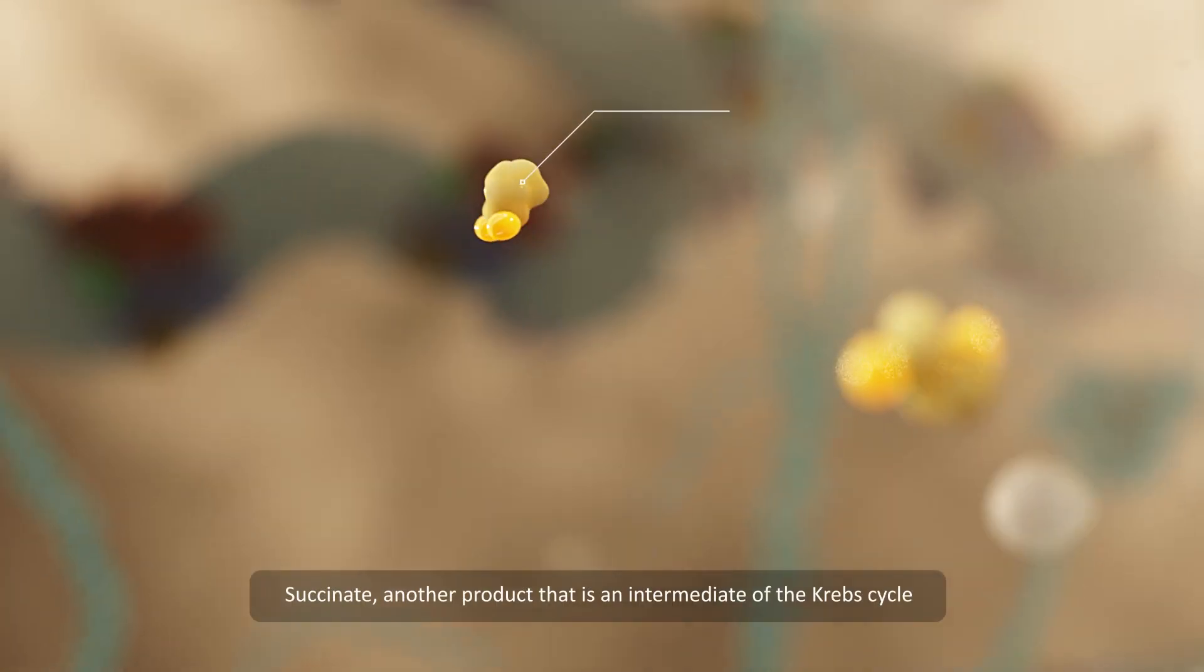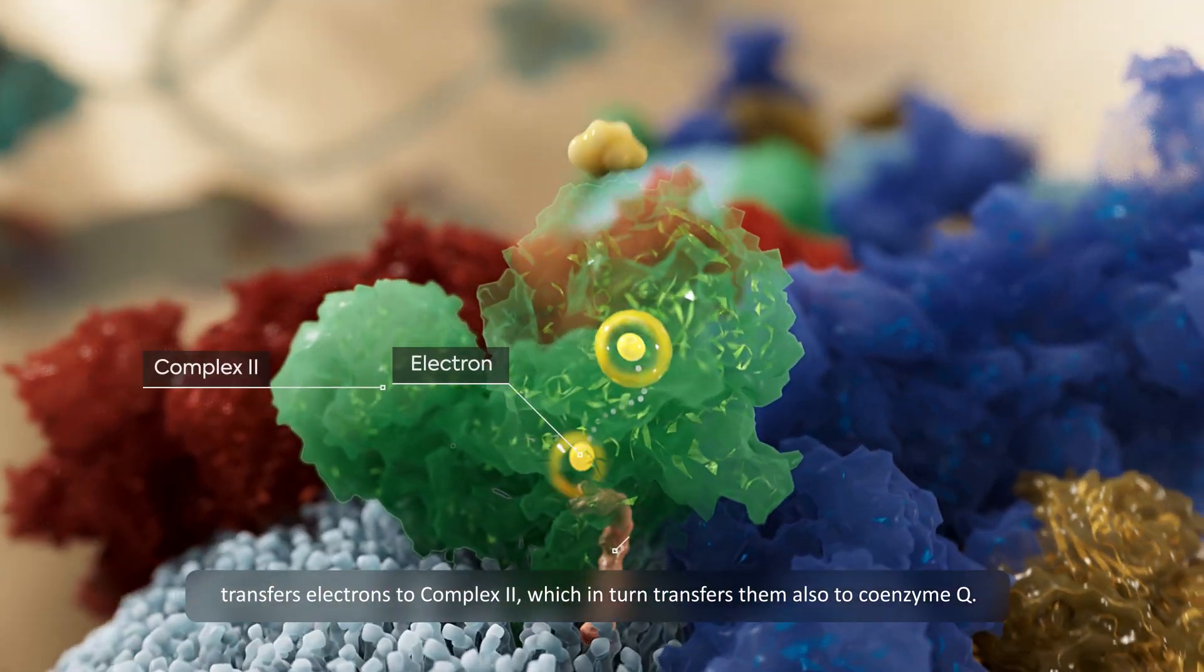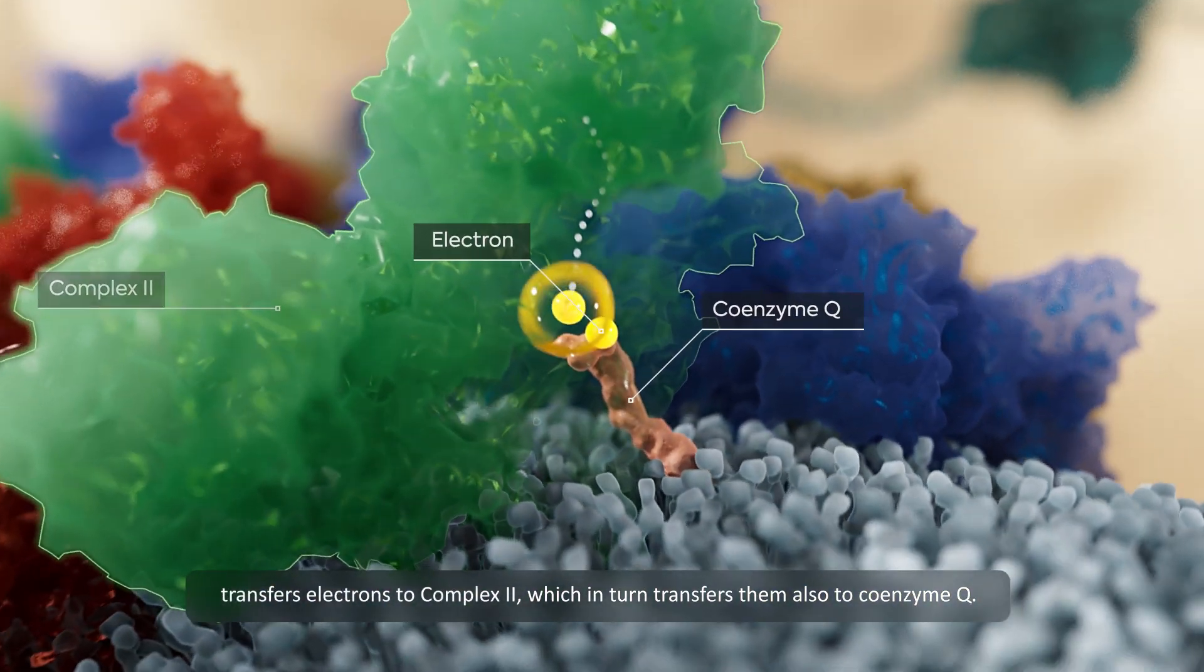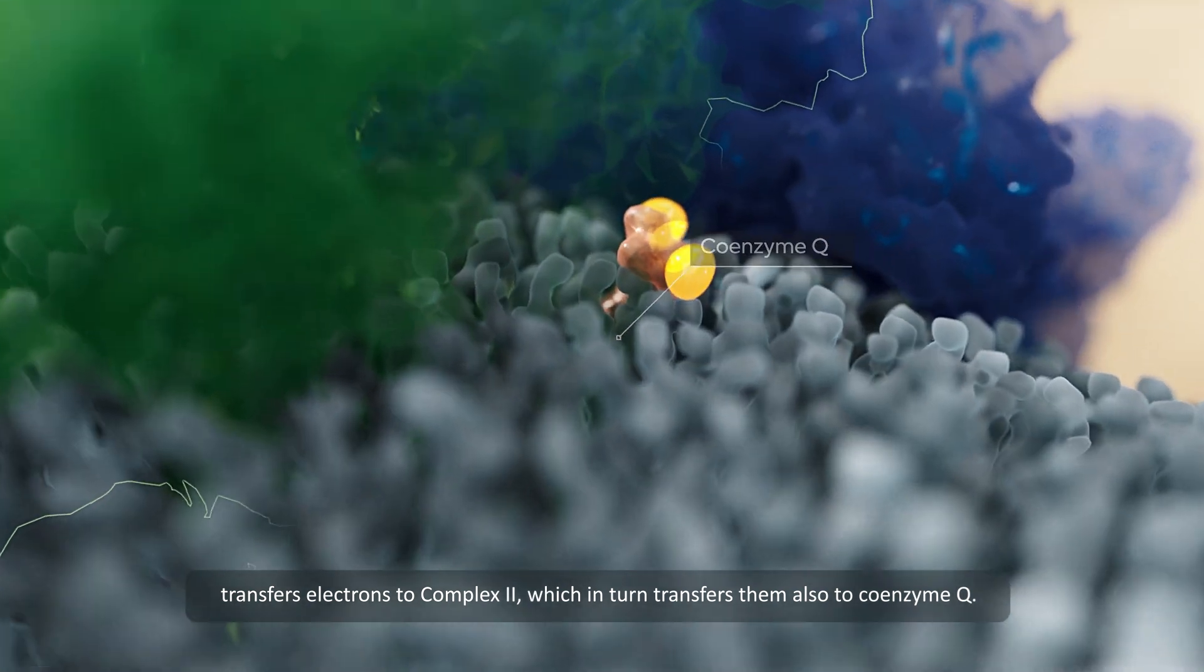Succinate, another product that is an intermediate of the Krebs cycle, transfers electrons to complex 2, which in turn transfers them also to coenzyme Q.